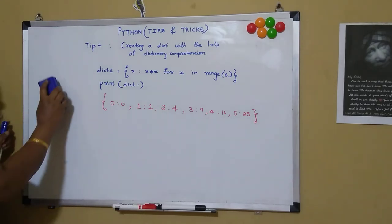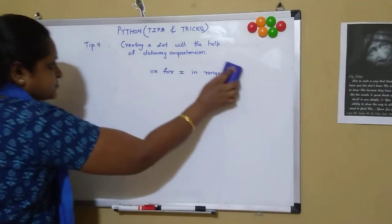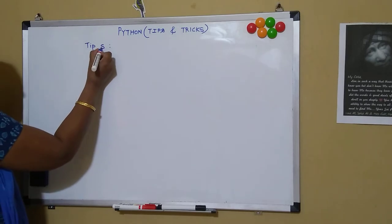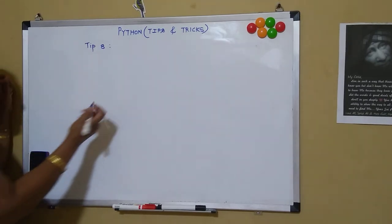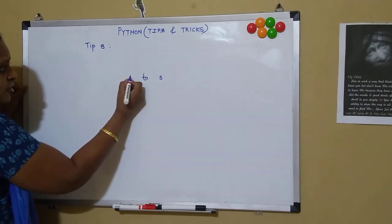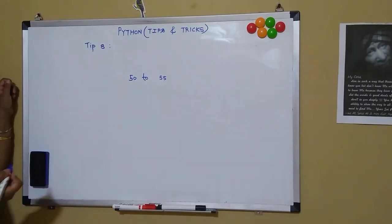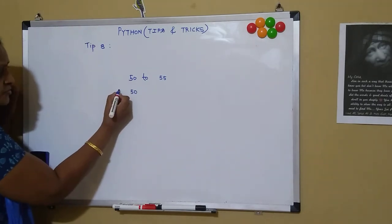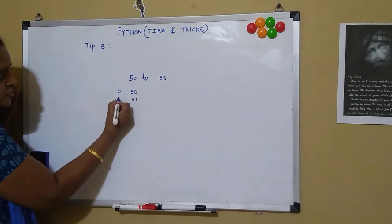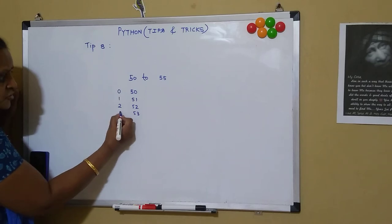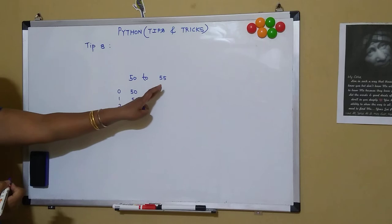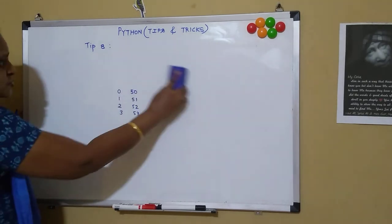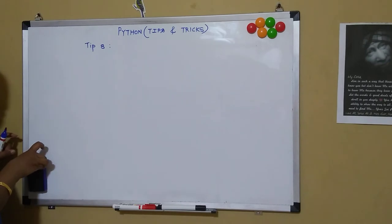After covering this, let's move on to the next tip. Suppose a list is ranging from 50 to 55 and I want an index value — value 50 should show index 0, 51 should show 1, 52 should show 2, 53 should show 3. So I want the index value as well as the actual values. The easy method of getting this is with the help of enumerate.